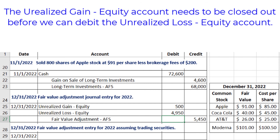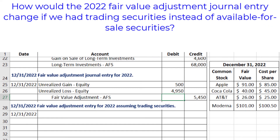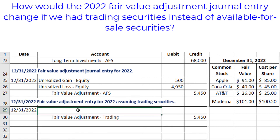If you had trading securities instead of available-for-sale securities, the fair value adjustment account would still be used — labeled 'trading' — for $5,450. However, you would not split the entry into two debits for a gain and a loss, because trading securities gains and losses go on the income statement, not the equity section of the balance sheet. Since they are temporary accounts that get closed out, the full $5,450 simply goes to unrealized loss — income statement. If you want more practice with trading security type problems, there's a practice problem in the associated PDF.